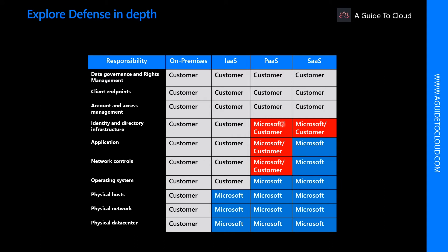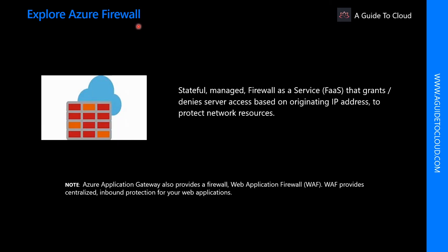Let's explore Azure Firewall. A firewall is a service that grants server access based on the originating IP address of each request. You create firewall rules that specify ranges of IP addresses, and only clients from those IP addresses will be allowed to access the server.